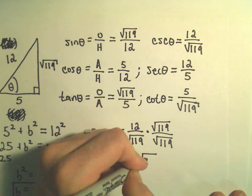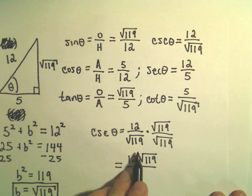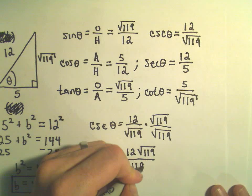That means in the numerator, we'll simply get 12 times the square root of 119. And the denominator will have the square root of 119 times the square root of 119, which is going to give us 119.